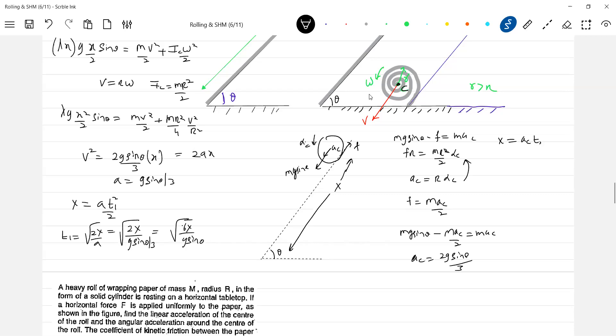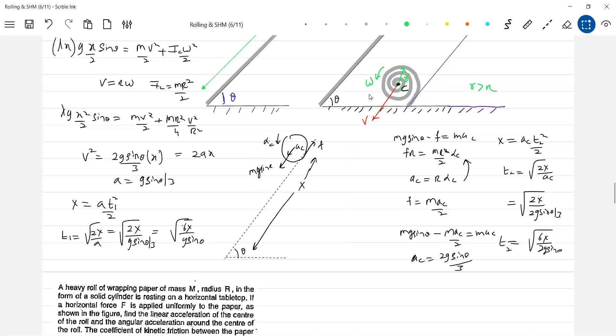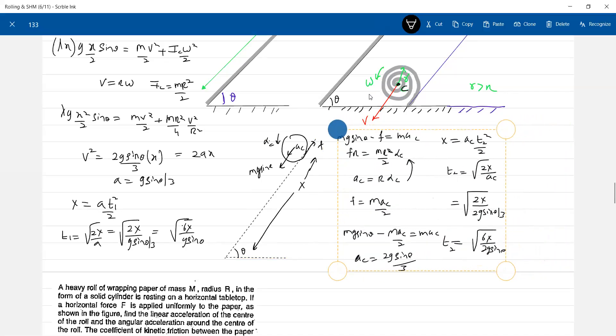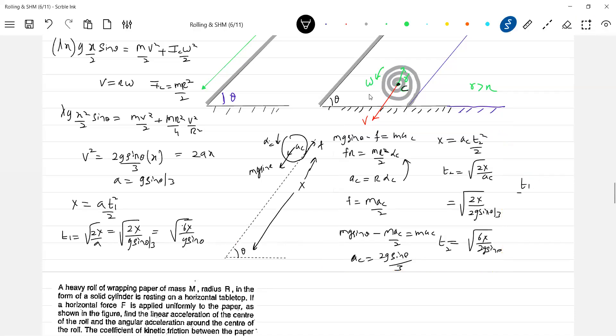Then x equal to a_c t2 square by 2. So t2 will be square root of 2x divided by a_c. So most of the data, if you can remember, I think in exams you can save time, that's what. This will be the answer. I'll scroll down.